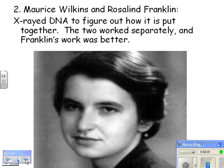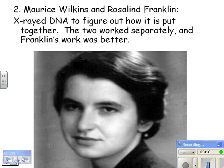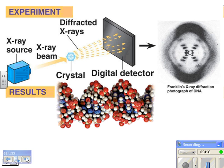Now we're going to look at Rosalind Franklin's work. Rosalind Franklin worked with Maurice Wilkins. They x-rayed DNA to figure out how it's put together. They knew Chargaff's work — that A goes with T and C goes with G — but they really didn't know how it went together. Rosalind Franklin crystallized DNA, isolating it from whatever species, then slicing it and running an x-ray through it to take pictures of what it would look like. These two worked separately, and Rosalind's work was a little bit better, so hers is the work that Watson and Crick used to figure out the structure.